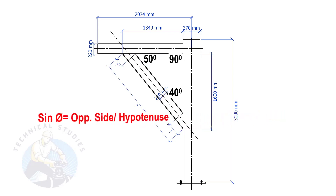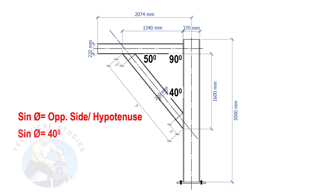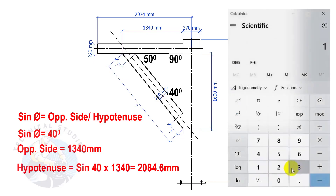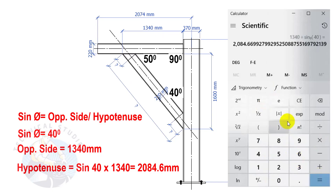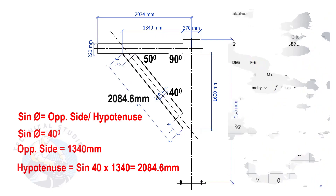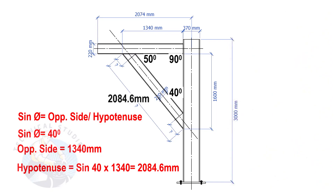Let us apply the sine formula. Sine(degree) equals opposite side divided by hypotenuse. Sine(40°) with opposite side equal to 1340 mm gives us the length of the bracing as 2084.6 mm.